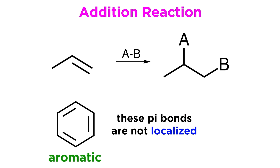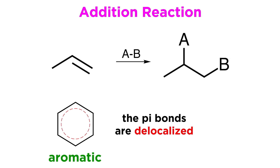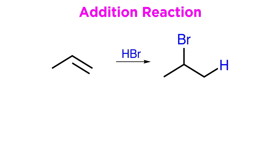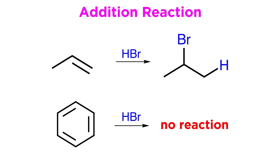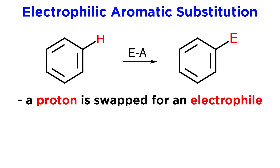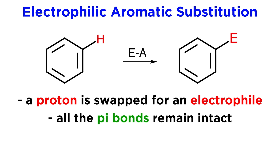These pi bonds are not localized like the example above. All these pi bonds are delocalized around the ring, and because of this, benzene is extremely stable — stable enough that it will be much less reactive towards the typical electrophiles we have seen for addition reactions. So while propene will react with hydrobromic acid, benzene will not. Instead, benzene can do electrophilic aromatic substitution. When this occurs, one of the protons on benzene will be substituted by the electrophile — they essentially swap places, and all of the pi bonds in benzene remain intact.